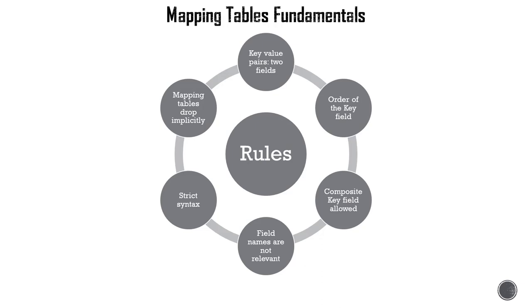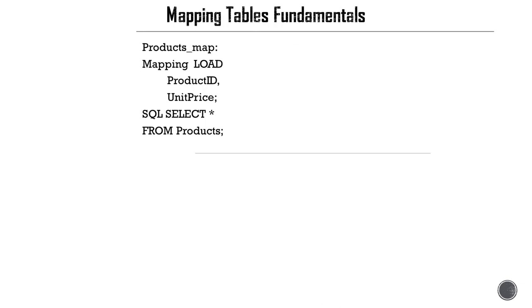These are six important core rules that you need to understand and use while you create a mapping table. Now let's look at some examples.